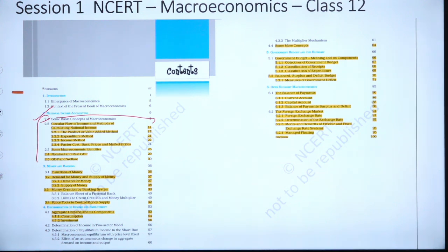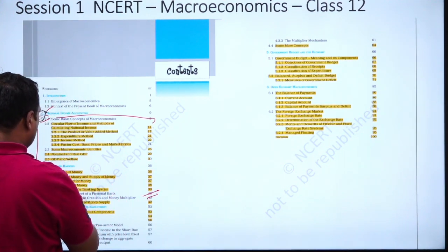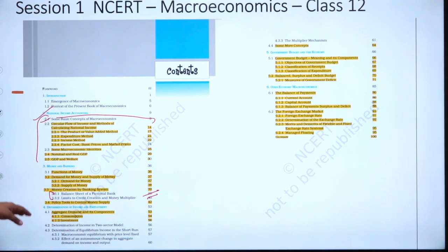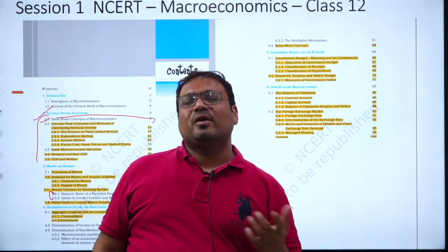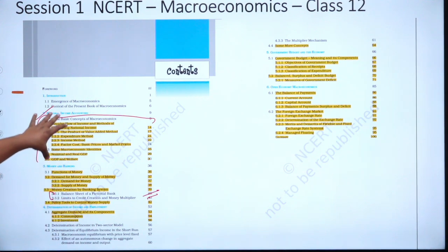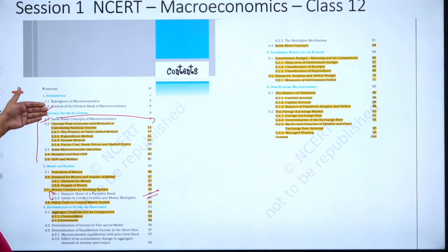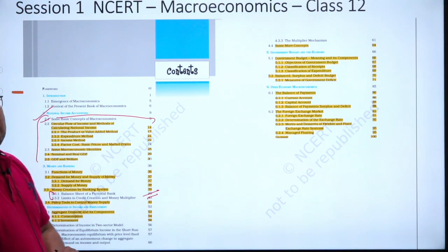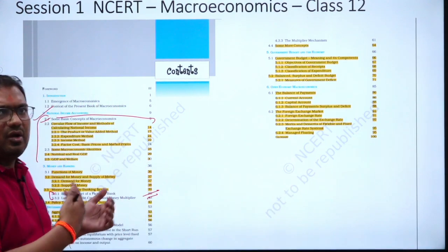We have to cover money and banking, but we can skip 'limits to credit creation multiplier' and 'fictional bank.' Policy tools to control money supply we have to study — that is a very important topic. GDP is mentioned in the syllabus, and when GDP is mentioned it covers basic national income accounting. When I cover this chapter I will expand the scope and cover additional terms related to those concepts.